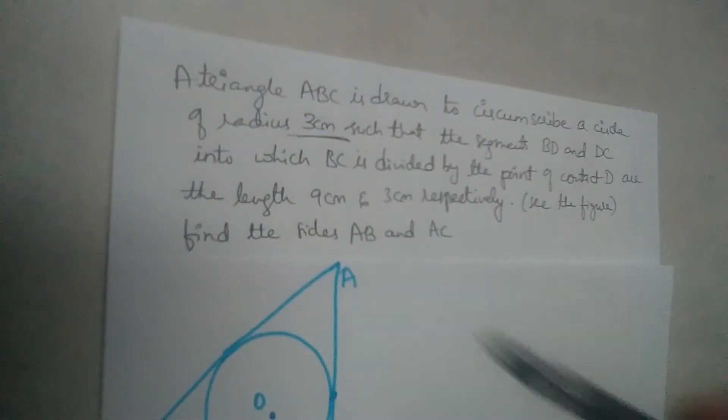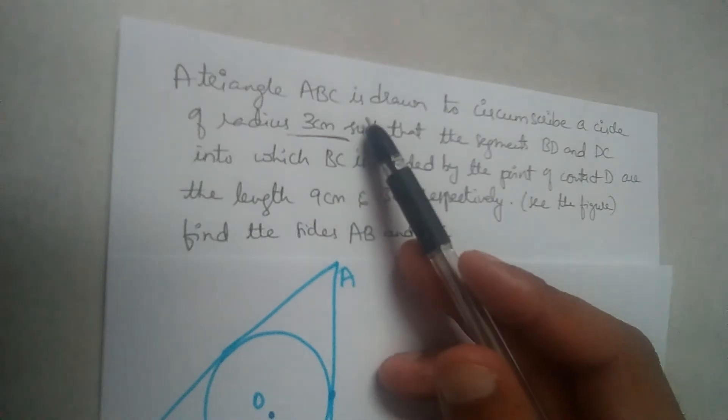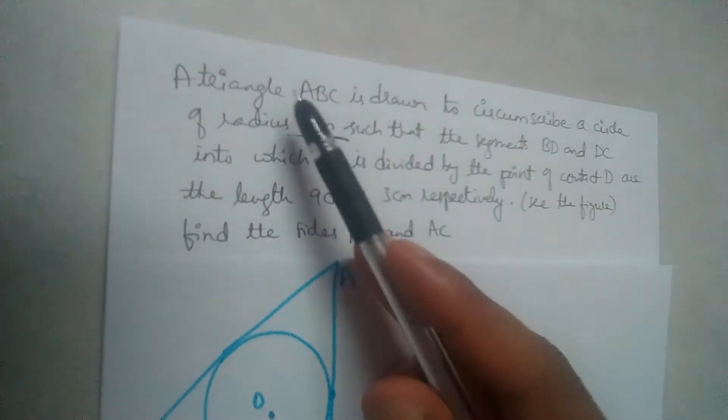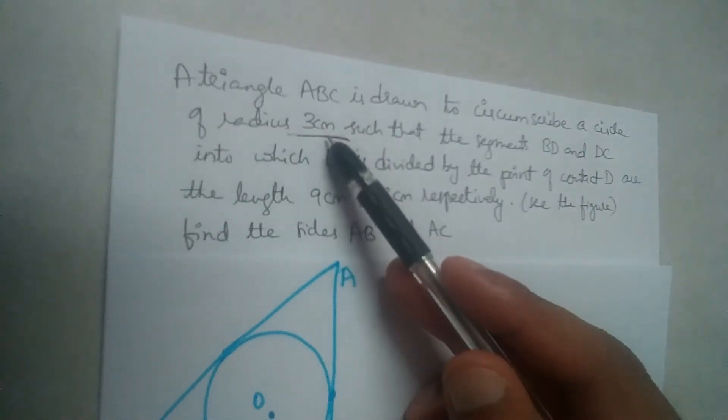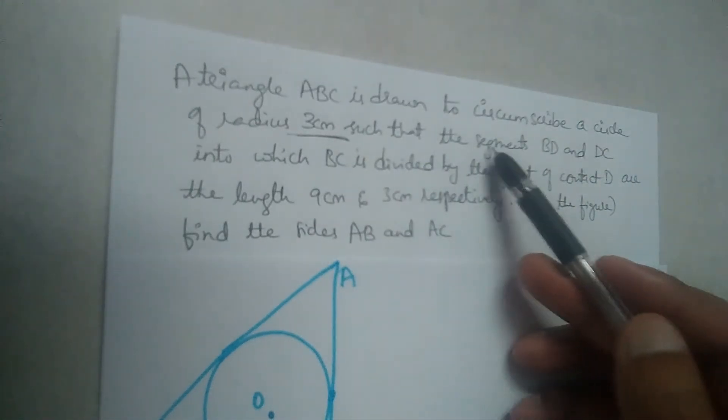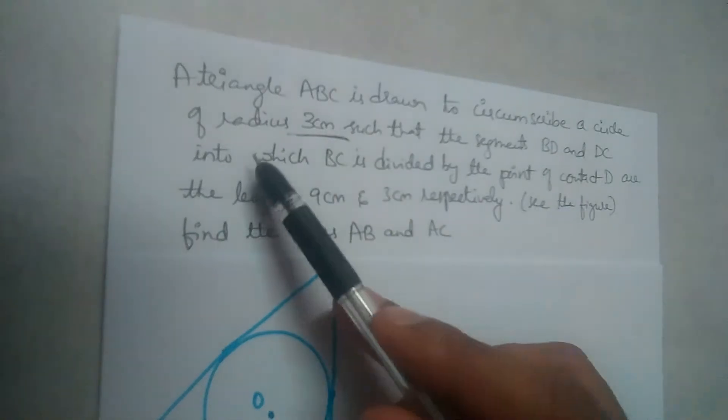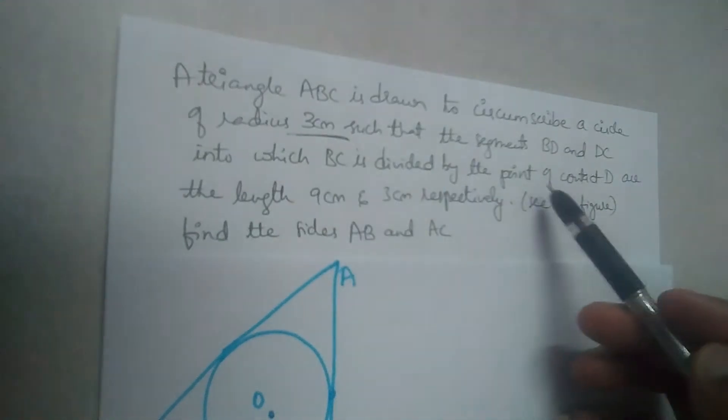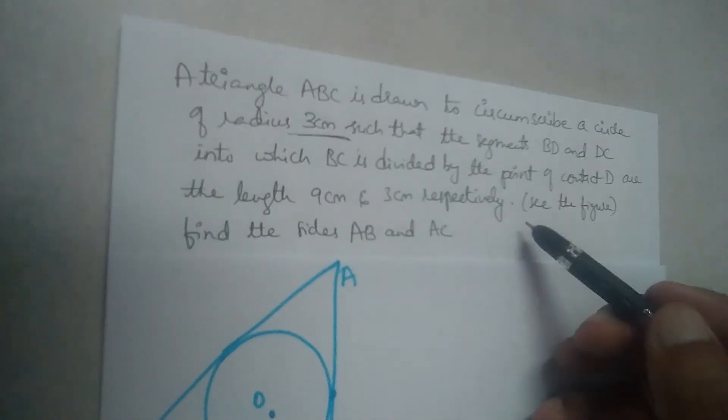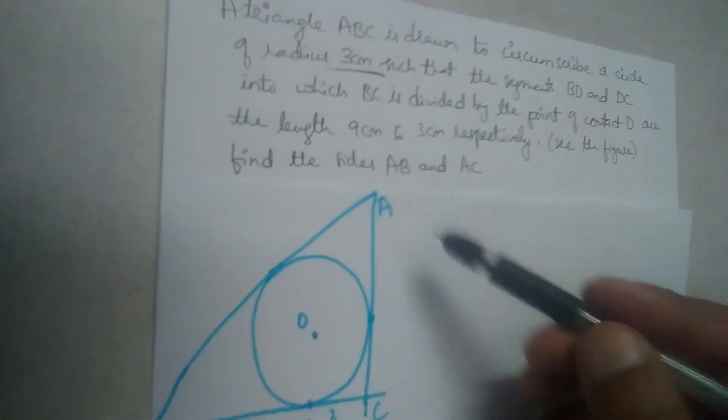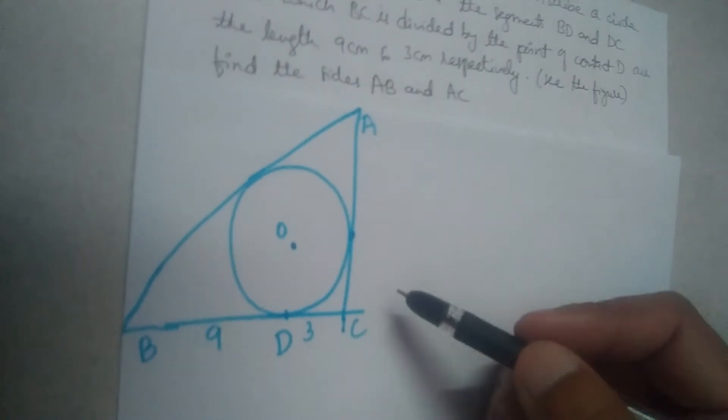We have a problem here. Triangle ABC is drawn to circumscribe a circle of radius 3 centimeters such that the segments BD and DC, into which BC is divided by the point of contact D, are 9 and 3 respectively. See the figure. Find the sides AB and AC. If you see the diagram, you will understand the question.